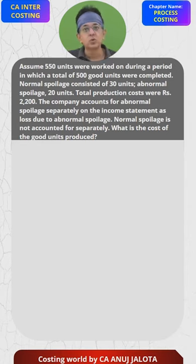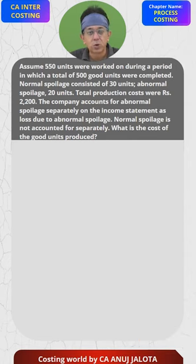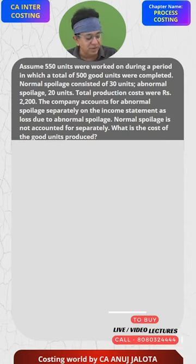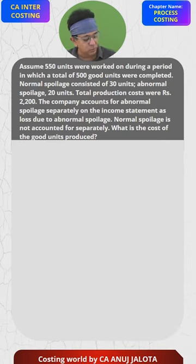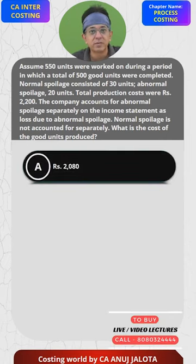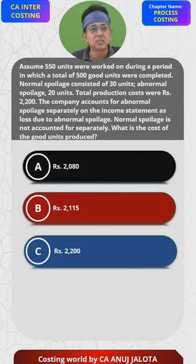They have asked for the cost of good units, which were produced — 500 units. So multiply that figure by 500. Accordingly, it will be 4.23 into 500, so therefore the answer is going to be 2115. Let's look at our options — searching for 2115. A is not the correct answer. B is the correct answer.